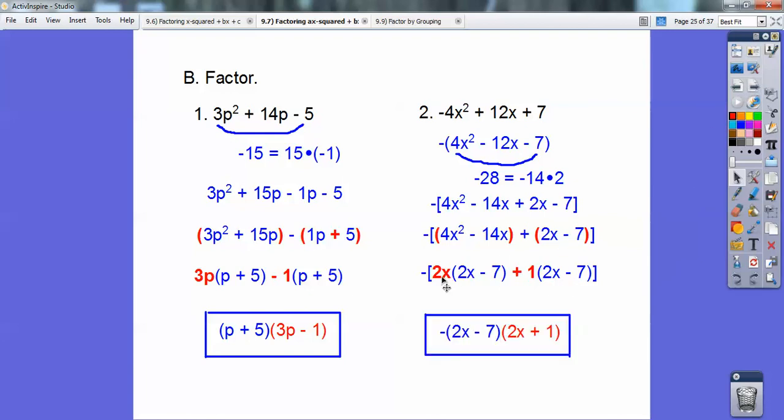See how they have the common 2x - 7s? I'm going to pull that out, and you're left with the red stuff, 2x + 1. There's the negative right there. Don't forget the negative.